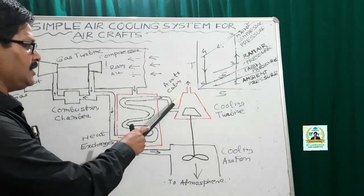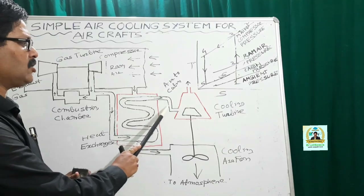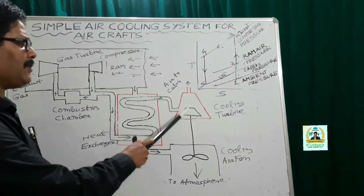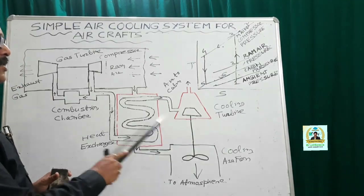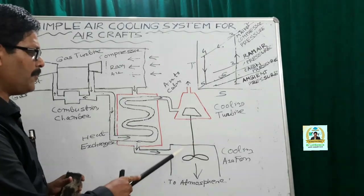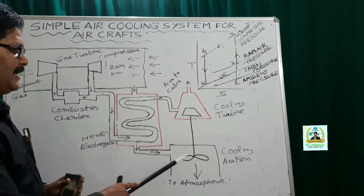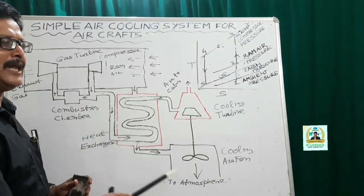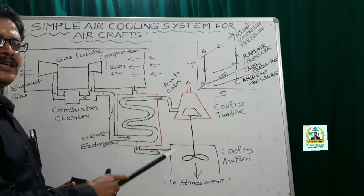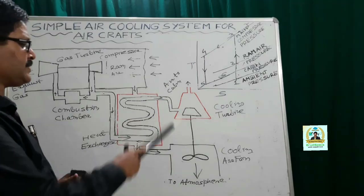After that, the air passing through the heat exchanger is made to flow through the cooling turbine. In the cooling turbine it undergoes expansion, and the power developed is used to operate a cooling air fan. The cooling air fan helps drive more and more air into the system.